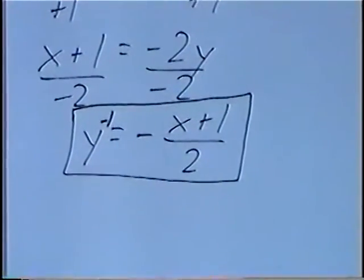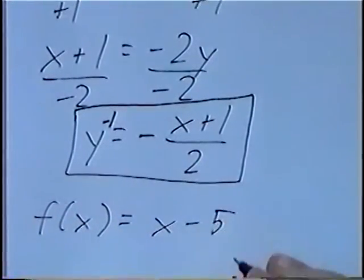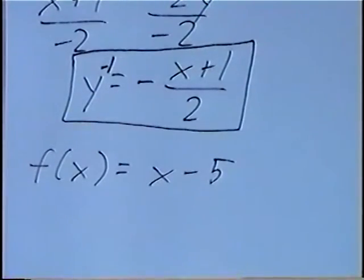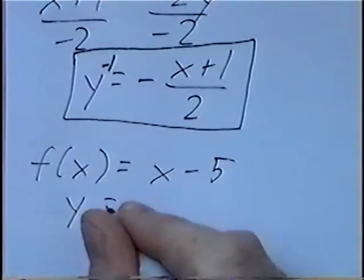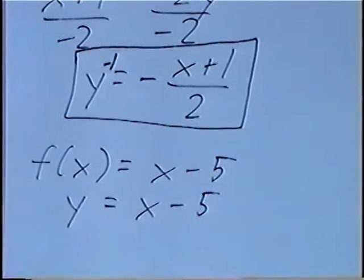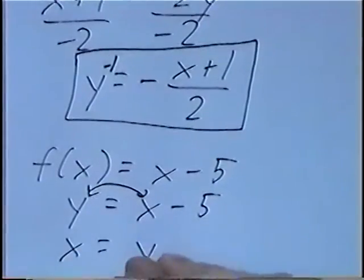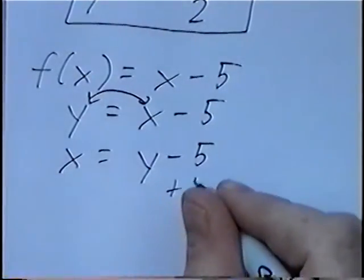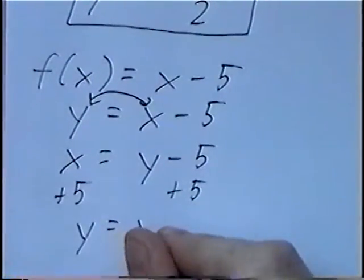Second and last question for the section: f of x equals x minus 5. Instead of y for the function, we have f of x. To find the inverse, we first replace f of x with y, since f of x is similar to the y value. Writing this as y equals x minus 5, we then switch x and y, giving x equals y minus 5. Solving for y, we add 5 on both sides, and writing y on the left-hand side, we get y equals x plus 5.